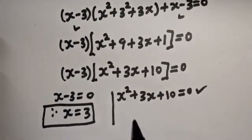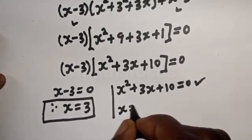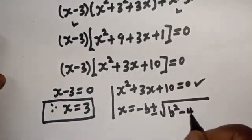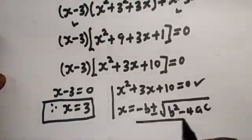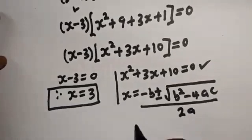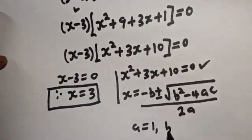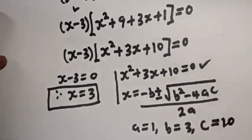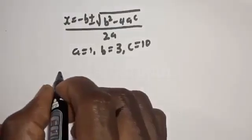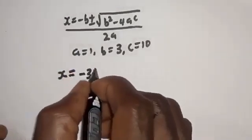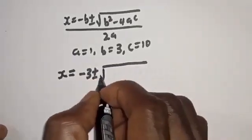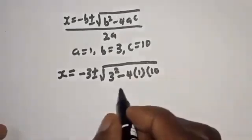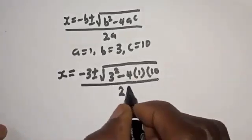The quadratic equation can be solved using the quadratic formula: s equals minus b plus or minus square root of b squared minus 4ac, all over 2a. Here a equals 1, b equals 3, and c equals 10. So s equals minus 3 plus or minus square root of 3 squared minus 4 times 1 times 10, over 2 times 1.